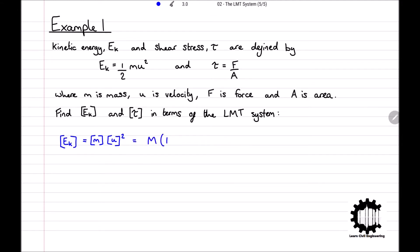So, substituting this into our equation, we get M times by LT to the power of minus 1 all squared. Simplifying this expression, we get that the dimensions of kinetic energy is equal to M times by L squared times by T to the power of minus 2.